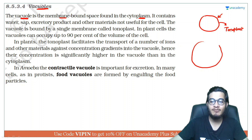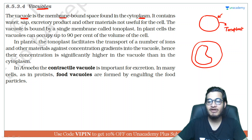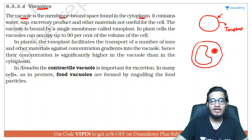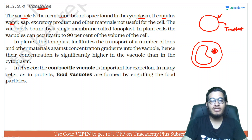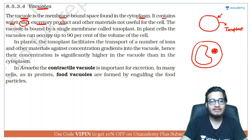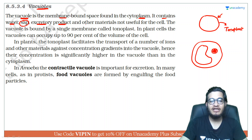So in a plant cell, the vacuole occupies about 90% of the space. The vacuole contains water, sap, sugars, excretory products, and other materials that are not useful to the cell.